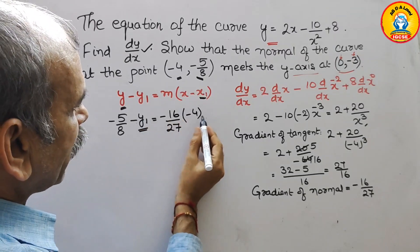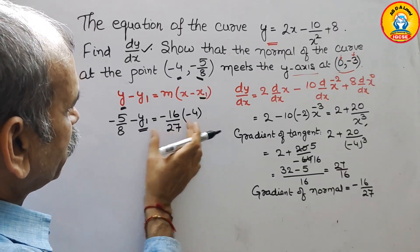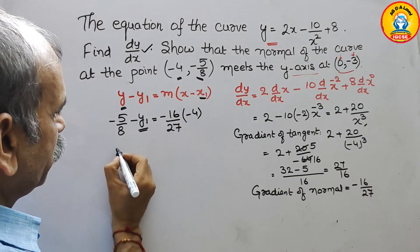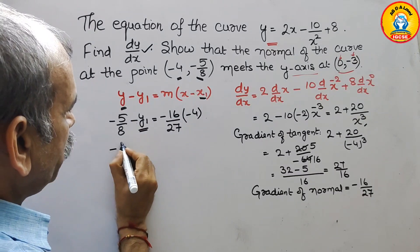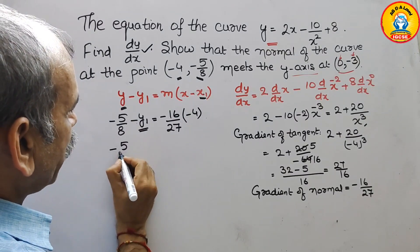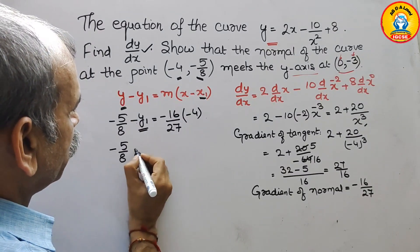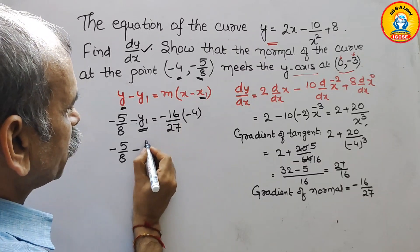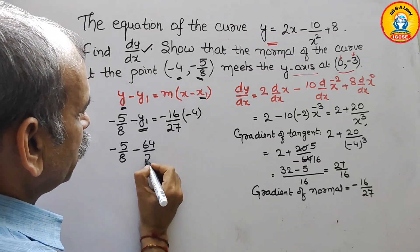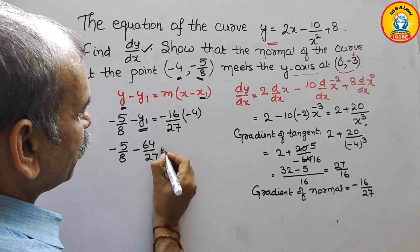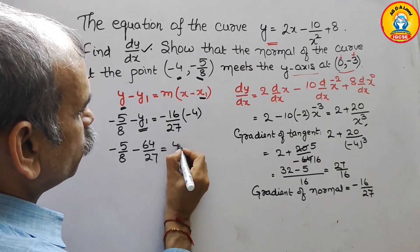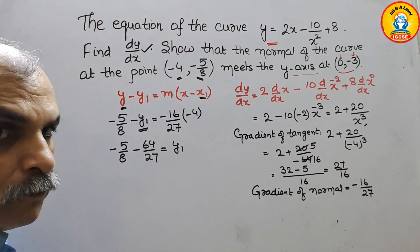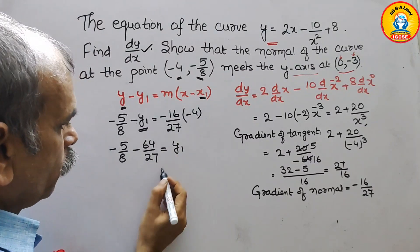We have to show this. So bring y₁ to one side and bring everything else to the other side. It will be minus 5 by 8 minus 64 by 27, that is equal to y₁.